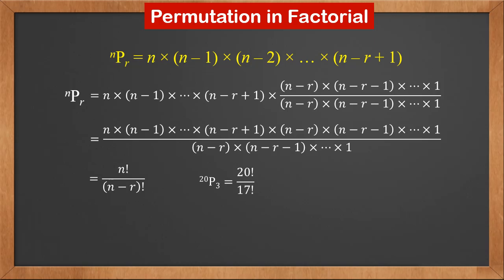So 20P3 is 20 factorial over 17 factorial. 32P4 is 32 factorial over 28 factorial.